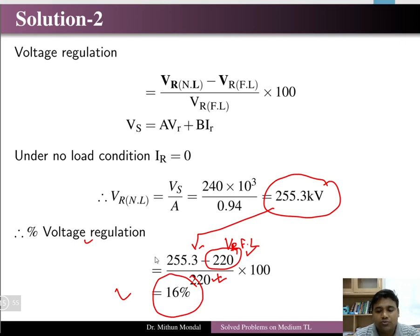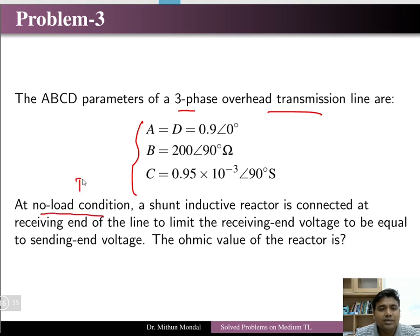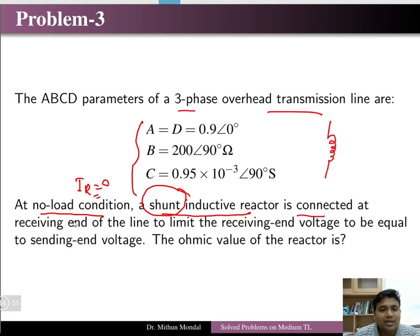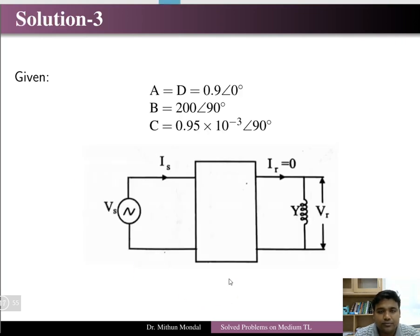Problem 3: Given the ABCD parameters of a three-phase overhead transmission line at no-load, a shunt inductive reactor is connected in parallel at the receiving end to limit the receiving end voltage equal to the sending end voltage. The condition is VS = VR. Find the ohmic value X of the reactor.